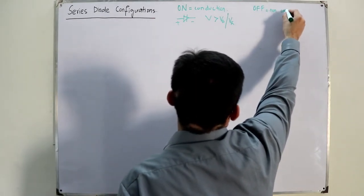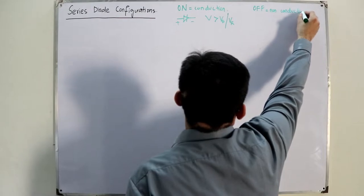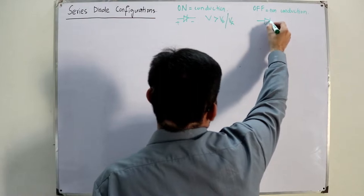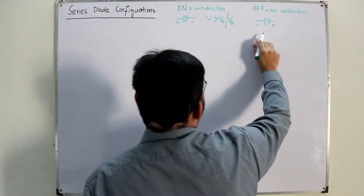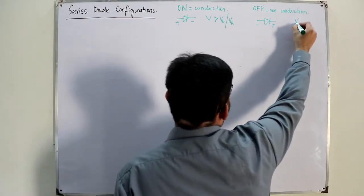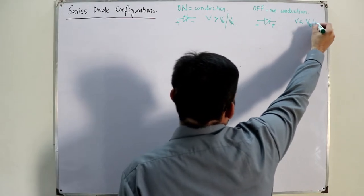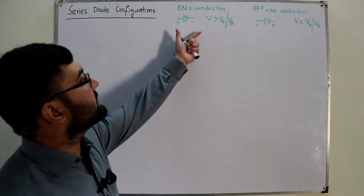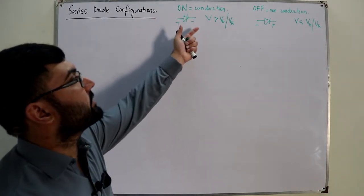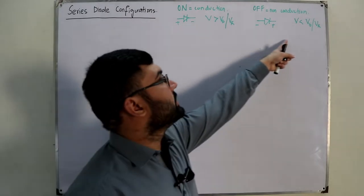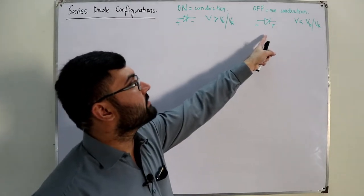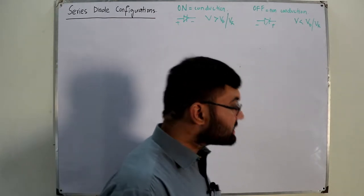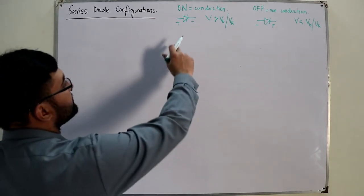The 'off' state is the non-conduction state. This occurs either when you have a reverse bias situation, or when V is less than the barrier potential or knee voltage. Even in a forward bias case, if the voltage is less than the knee voltage, the diode remains in non-conduction. Similarly, if reverse biased and the voltage is greater, it is still off.